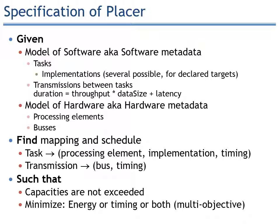Transmissions are defined mostly by the data size, so that the transmission duration is computed by the formula you see on the slide: the throughput multiplied by the data size and the latency. Throughput and latency are properties of buses. The model of the hardware, or hardware metadata, includes the processing elements — the FPGA and CPU — with their own characteristics. Typically you can define the operating frequency of the CPU, the number of gates and multipliers of the FPGA. Basically, you are free to define any kind of cumulative resource for processor and FPGA.